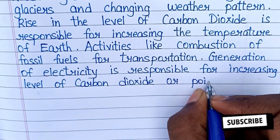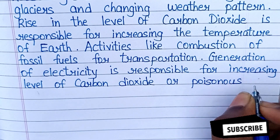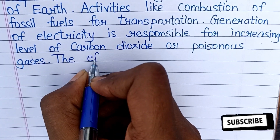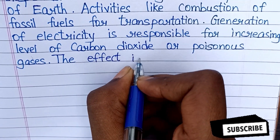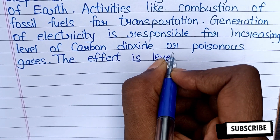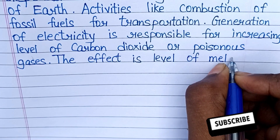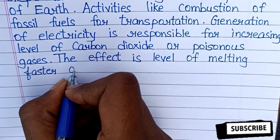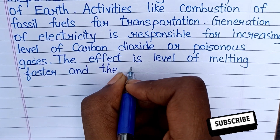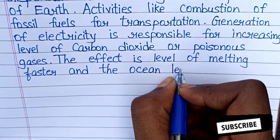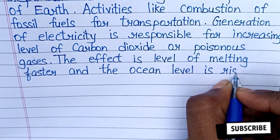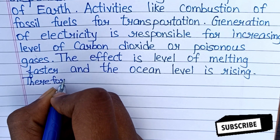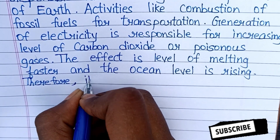Generation of electricity is also responsible for increasing levels of carbon dioxide and poisonous gases. The effect is that glaciers are melting faster and ocean levels are rising.